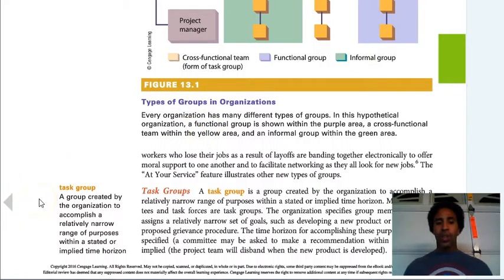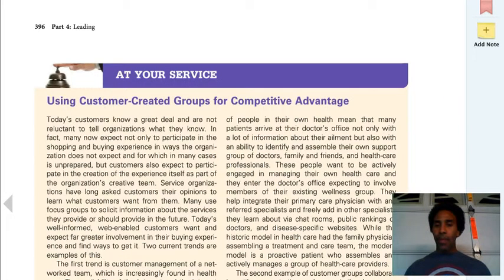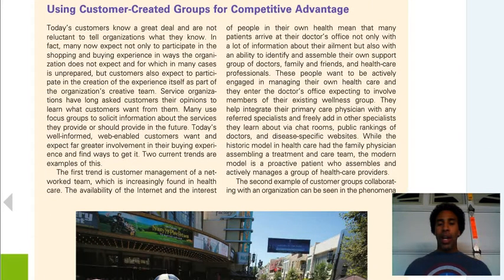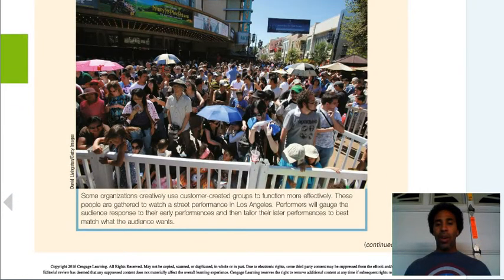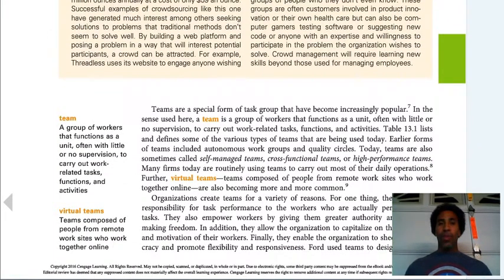A task group is a group created by the organization to accomplish a relatively narrow range of purposes within a stated or implied time horizon. You have a stated time: 'You guys have 30 days to complete this project' — picking people from customer service, claims, and the administrative department, putting them together with a goal to work towards. A company I work for definitely utilizes customer-created groups for competitive advantage, taking a number of different departments, putting them together, and doing a permanent task force to assist clients that need that type of assistance.